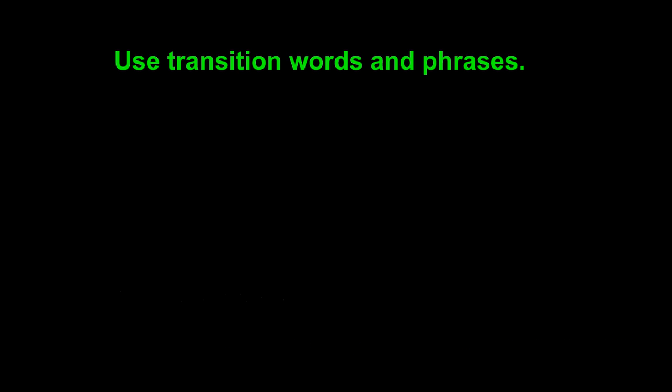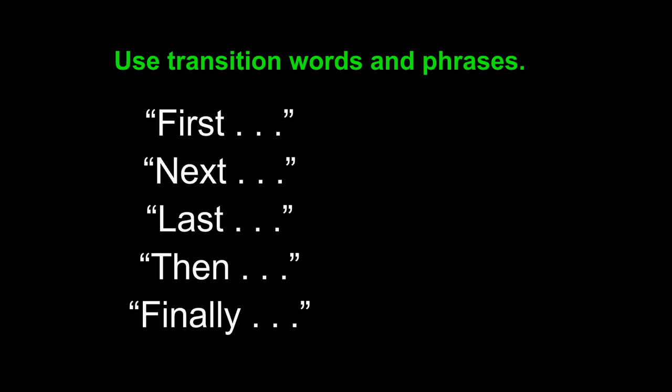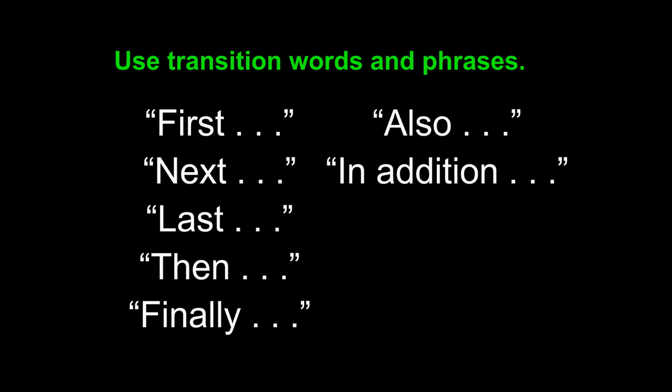Now is the time for us to consider transition language — transition words and phrases. Each sentence within a paragraph must relate to the sentences around it, and transition words and phrases can help you do that. In sequence writing, transition words and phrases are key to understanding the steps of a process. You may wish to use simple words like first, next, last, then, or finally. You can also use words and phrases like 'also' or 'in addition.' These simple words and phrases show how one sentence leads into another and demonstrate that you understand the development of ideas.